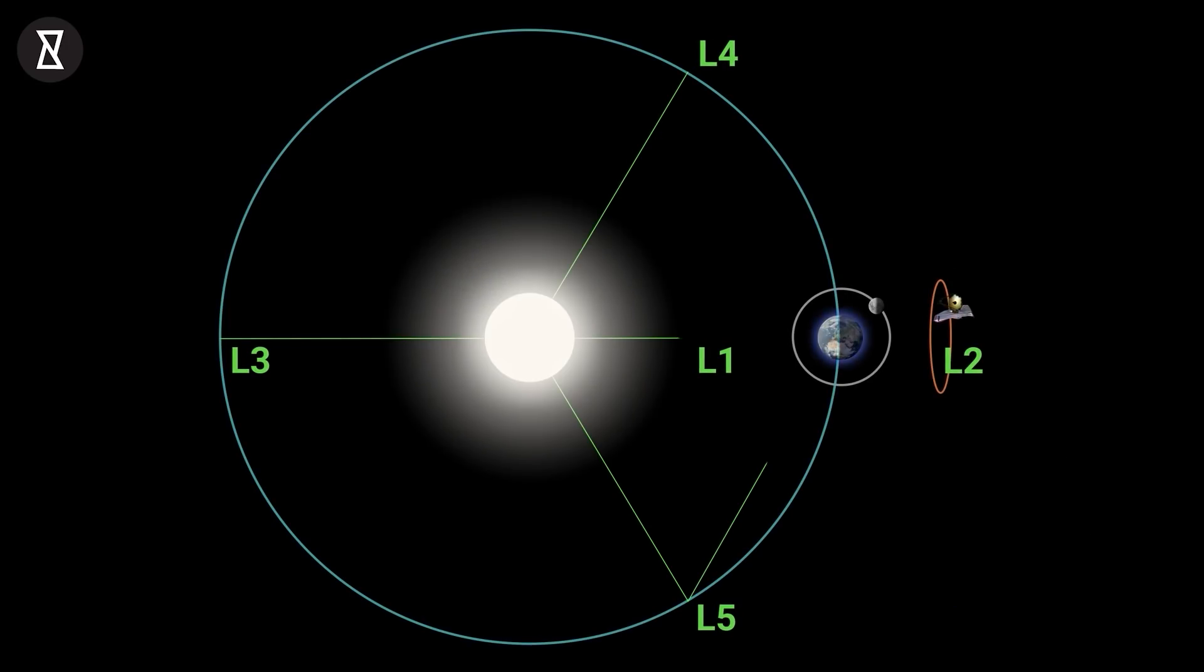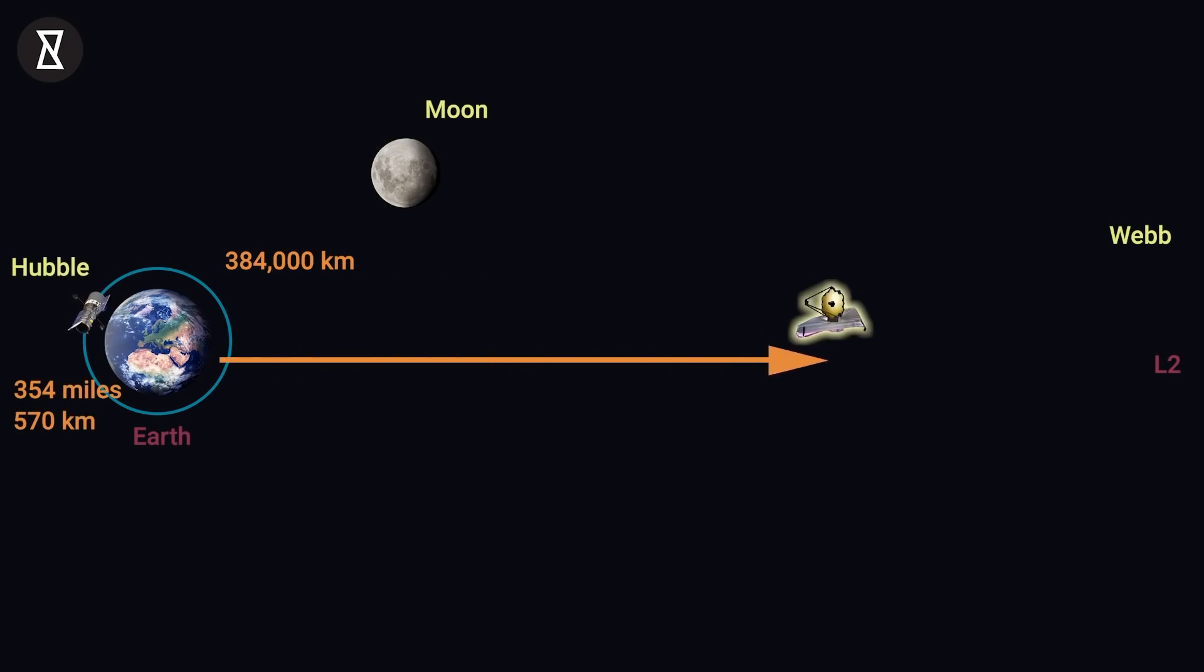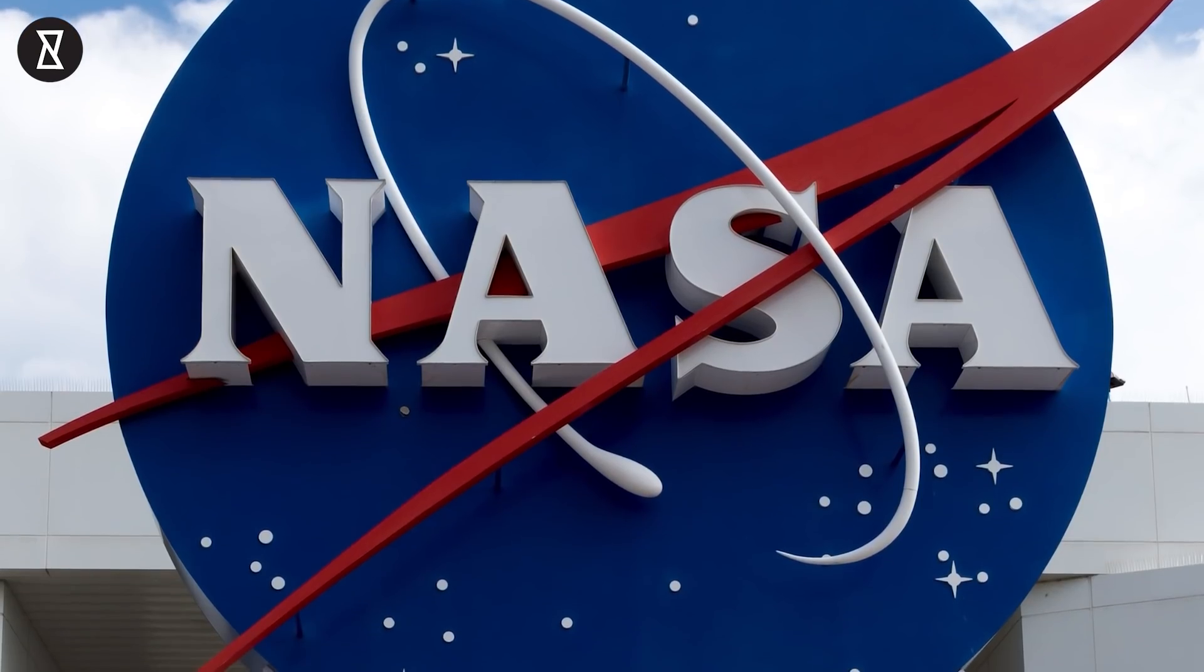After reaching its orbit at the second Lagrange point, L2, an area of balance between gravitational forces of the Earth and the Sun, NASA revealed its first target.